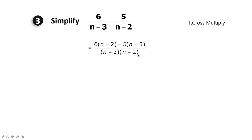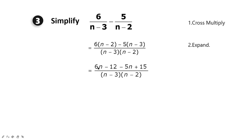The next step is to expand. The 6 multiplies everything in the first bracket and the negative 5 multiplies everything in the second bracket. So we get 6n - 12 - 5n + 15 (since negative 5 times negative 3 is positive 15), all over (n - 3)(n - 2).